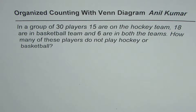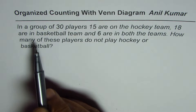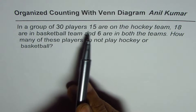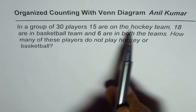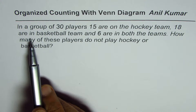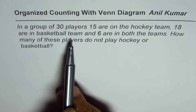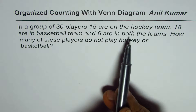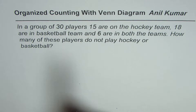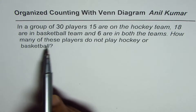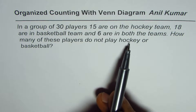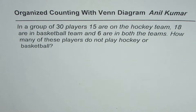I'm Anil Kumar. We'll further explore the principle of inclusion and exclusion in this video. In a group of 30 players, 15 are on the hockey team, 18 are in the basketball team, and 6 are in both the teams. How many of these players do not play hockey or basketball? That is the question.